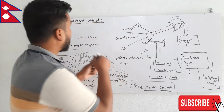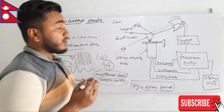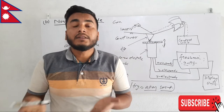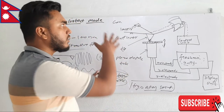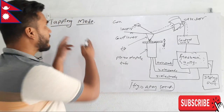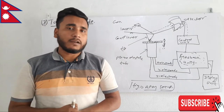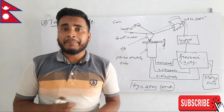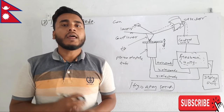If contact mode is risky and non-contact mode is not perfectly accurate, then tapping mode is the solution — it is the best among the three modes, and the limitations of both contact and non-contact modes can be overcome in this mode.